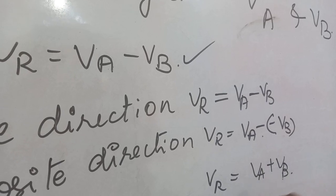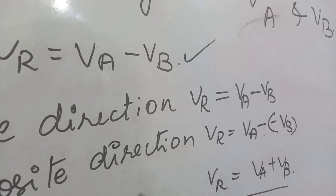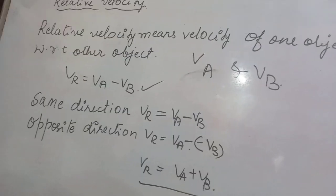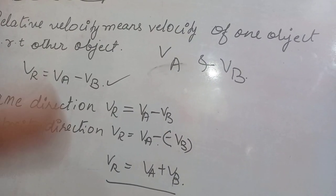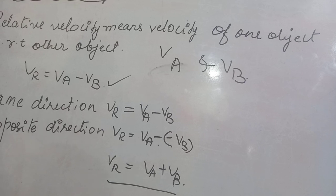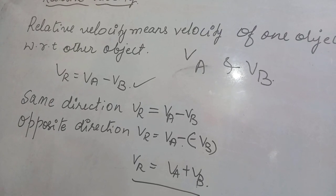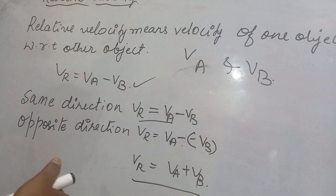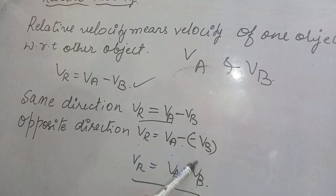To summarize relative velocity: considering VA and VB as the velocities of the two bodies, the relative velocity is VA minus VB for same direction, and for opposite direction, VR equals VA minus (minus VB), that is VR equal to VA plus VB. This is the equation for relative velocity in the opposite direction.